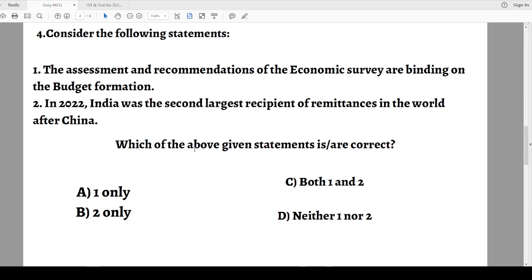Question four: Consider the following statements. Statement one: The assessment and recommendation of the Economic Survey are binding on the budget formation. Statement two: In 2022, India was the second largest recipient of remittances in the world after China. Which statements are correct? Options: 1 only, 2 only, both, or neither.